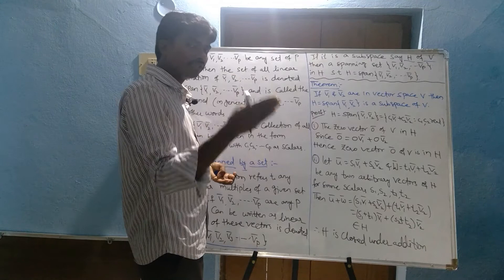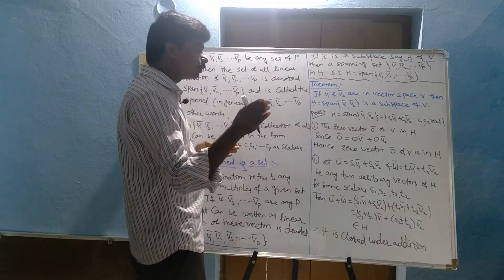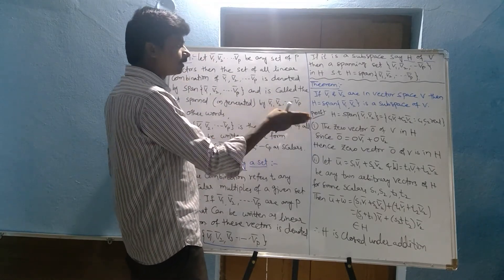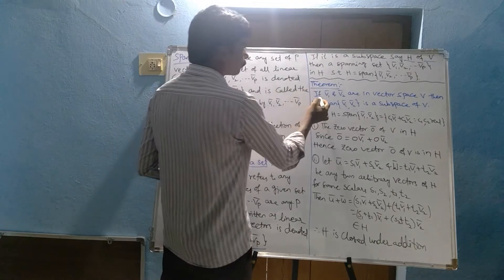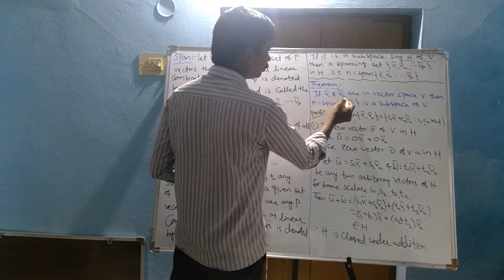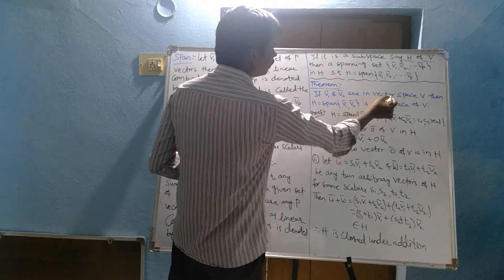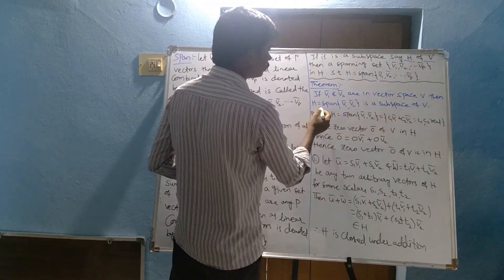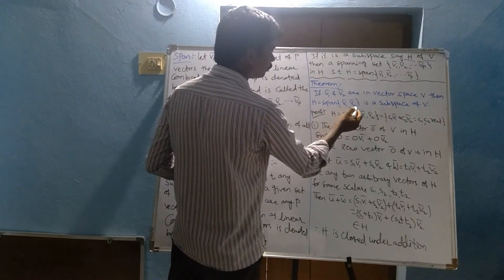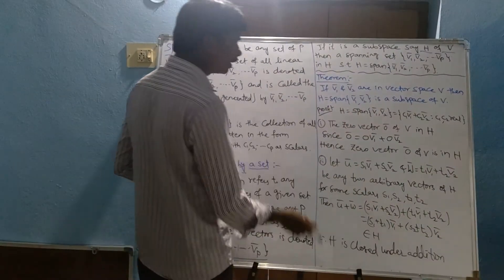Remember these three properties. Now the theorem statement: If V1 bar and V2 bar are in vector space V, then H equals span of V1 bar, V2 bar is a subspace of V.